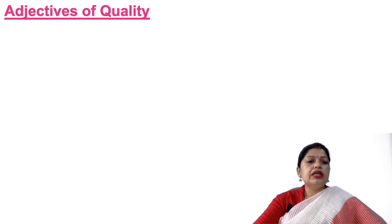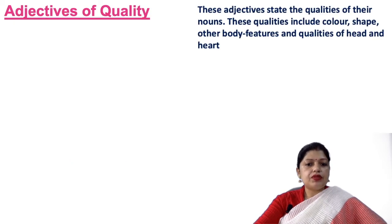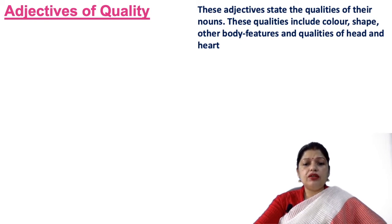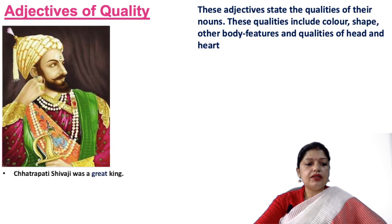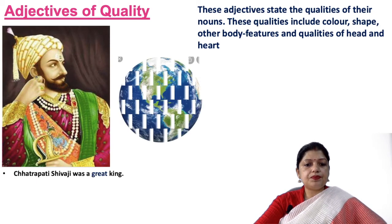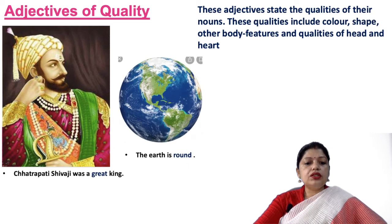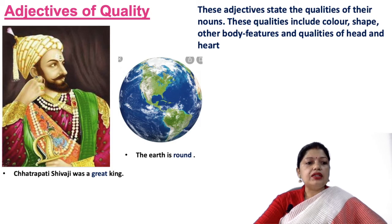Adjectives of quality state the qualities of their nouns, including color, shape, other body features, and qualities of head and heart. For example: 'Chhatrapati Shivaji was a great king' and 'The earth is round.' In the first sentence, 'great,' and in the second sentence, 'round,' are adjectives of quality.